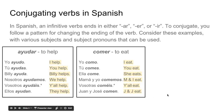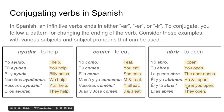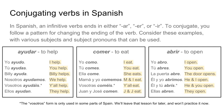Let's look at an IR verb — I think you're noticing a pattern. 'Abrir' means 'to open.' 'Yo abro' — I open. 'Tú abres' — you open. 'La puerta abre' — the door opens. 'Él y yo abrimos' — he and I open. 'Él y tú abrís' — he and you open, used only in Spain. And 'ellas abren' — they open. Note that the vosotros form is only used in some parts of Spain, and we will leave that lesson for later.